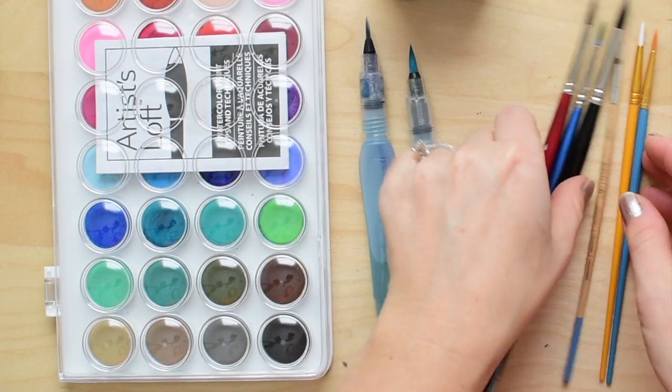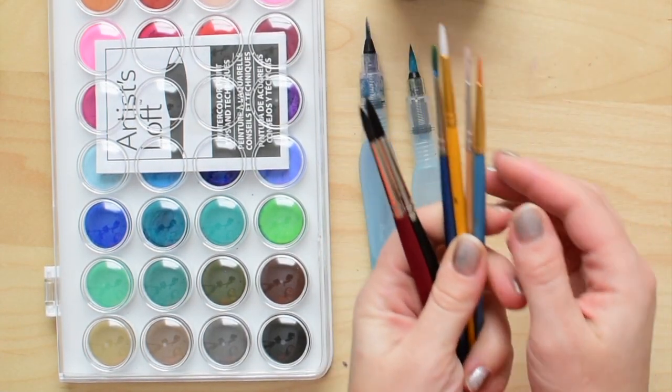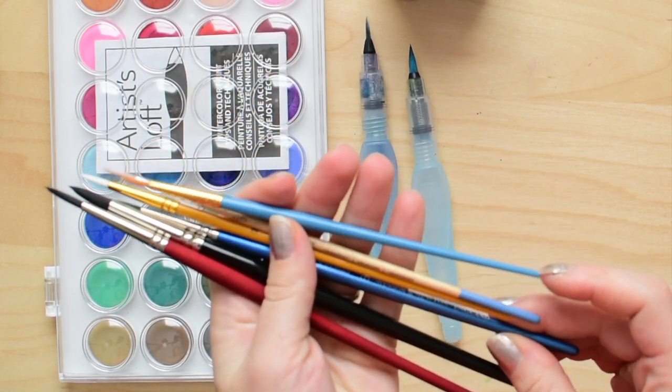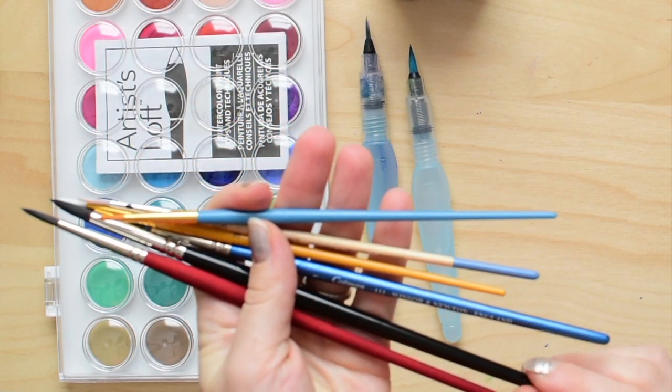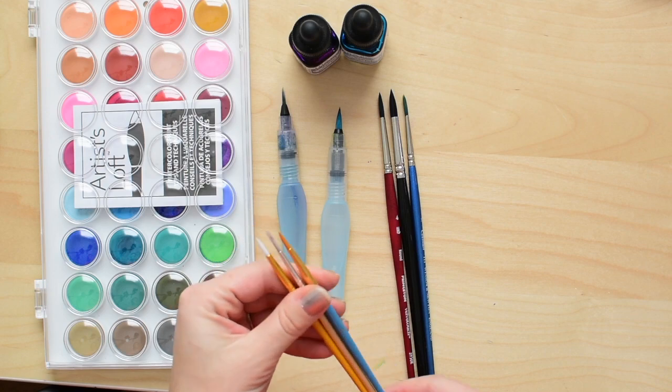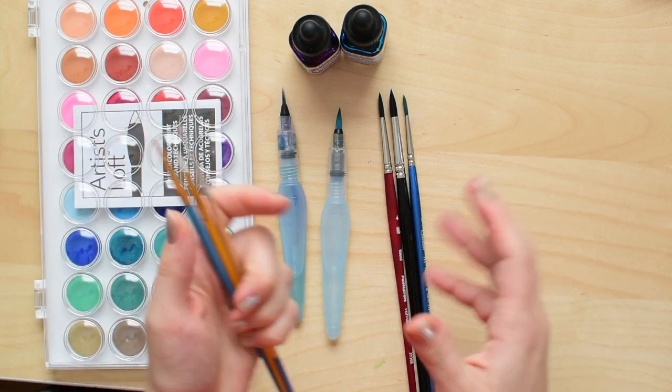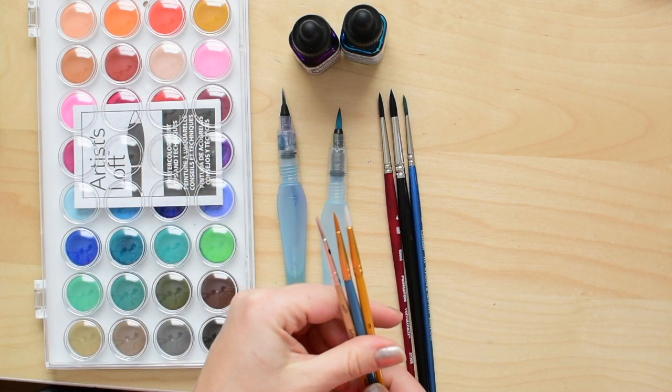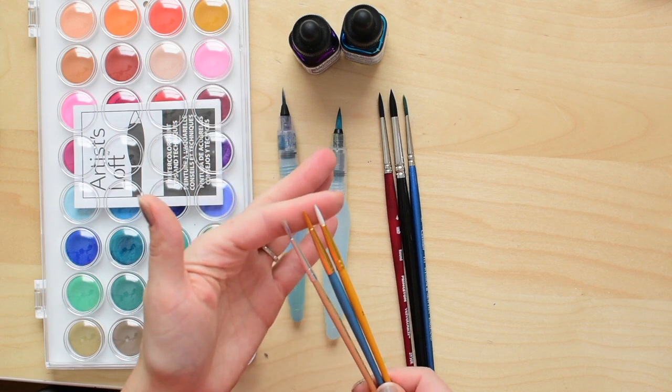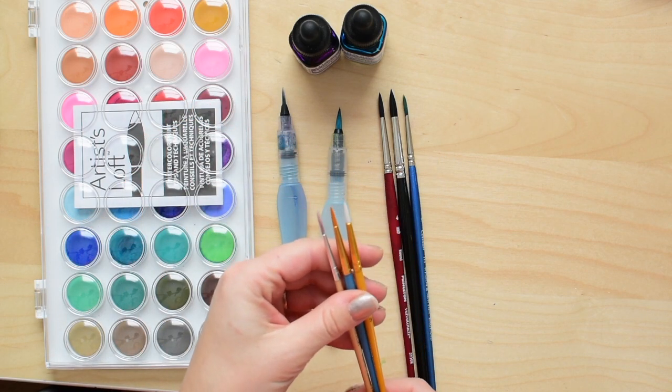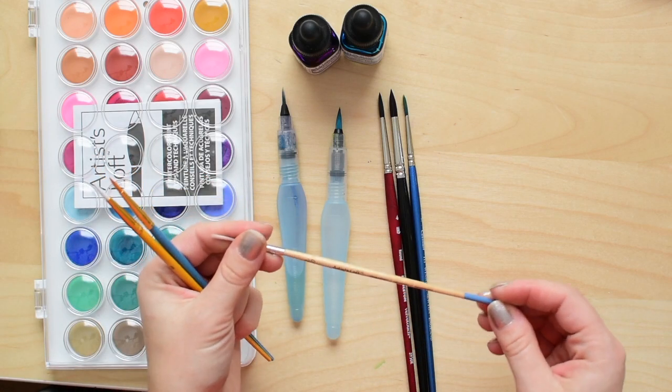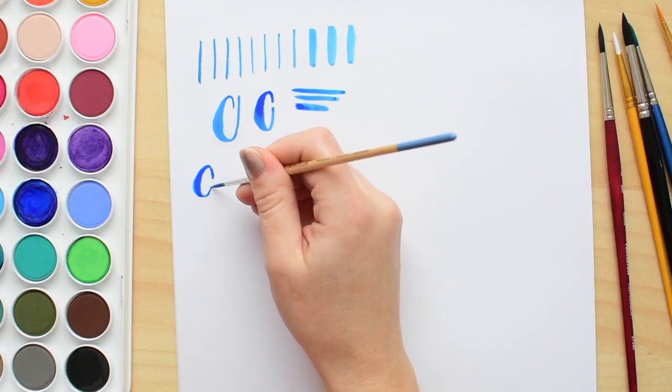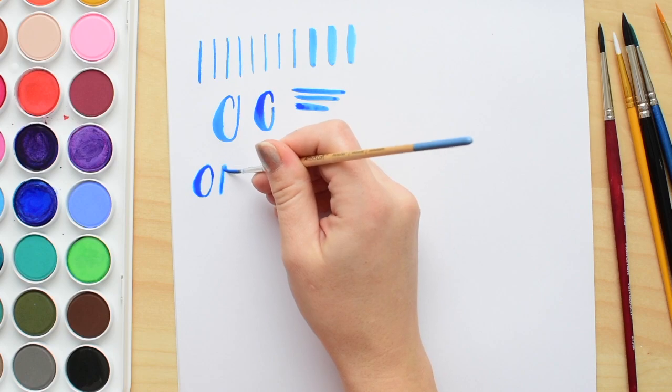If you don't want a water brush, just get yourself a round brush size anywhere from two to four. Different brands have different sizing, so just go with one and see how you like it. Just make sure it's a round brush with a nice sharp tip. These ones are the cheapest you can find at Michael's - they're Artists Loft and they get the job done.